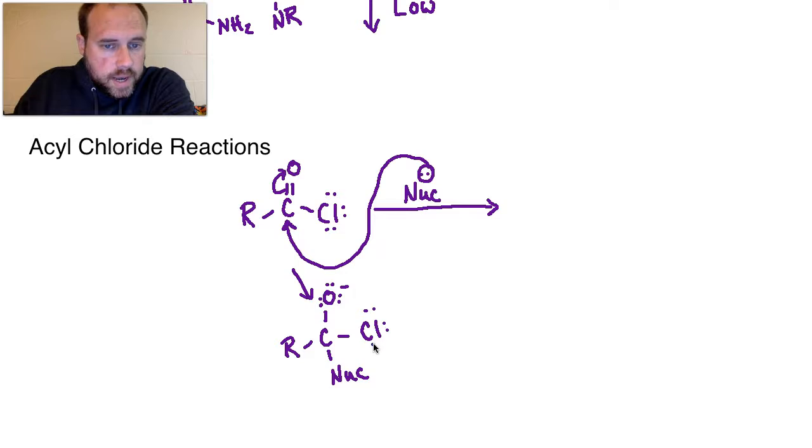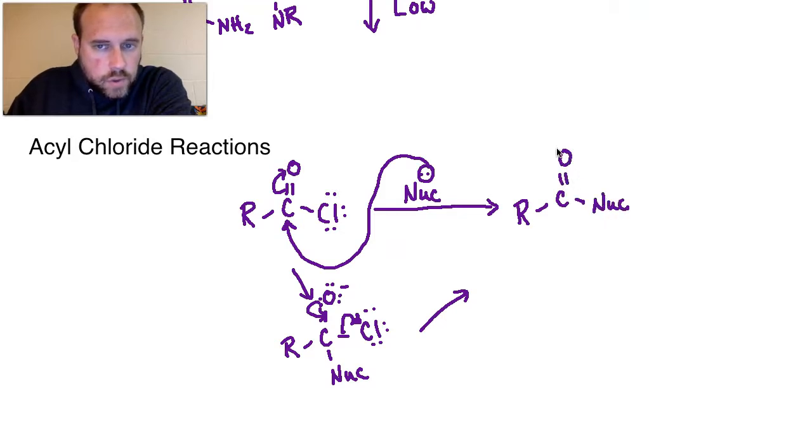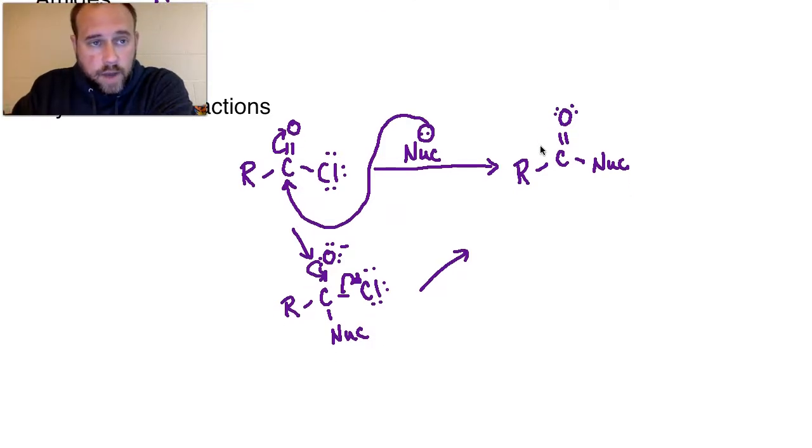So when we get to that point, you would go down into the tetrahedral intermediate state. Now, of course, we can't have a carbon with five bonds, so this pi electron set needs to move up to the oxygen to create a lone pair here. So when we do that, we're going to get R-C. Now this is going to be O- when we get to this stage, and then we would have nucleophile that's attached itself, and then we have the chlorine. Now at this point, for this intermediate, chlorine is an excellent leaving group.